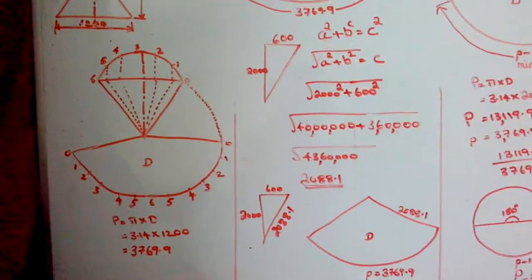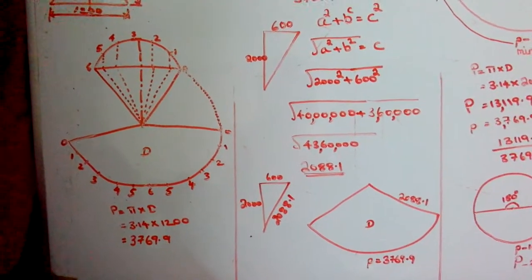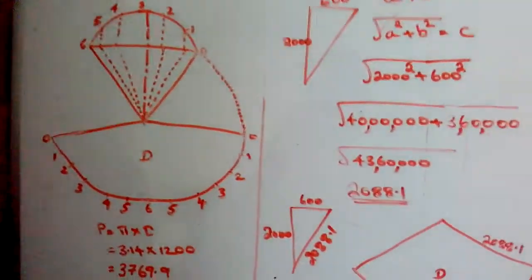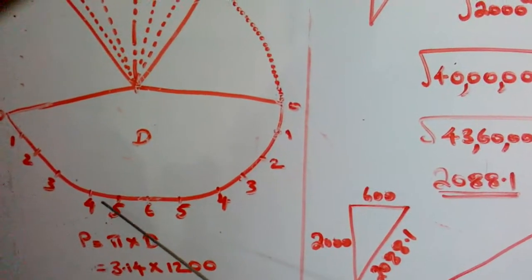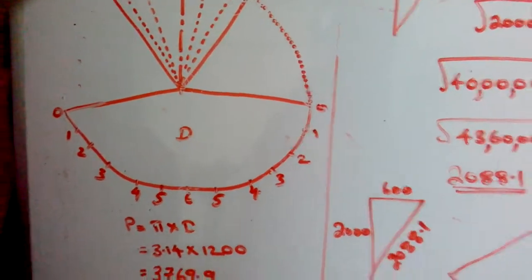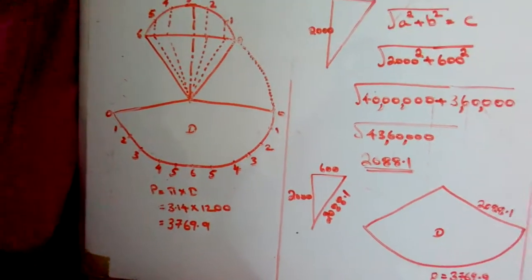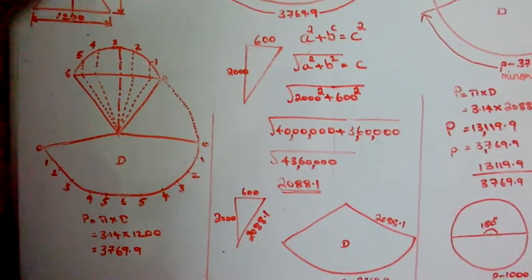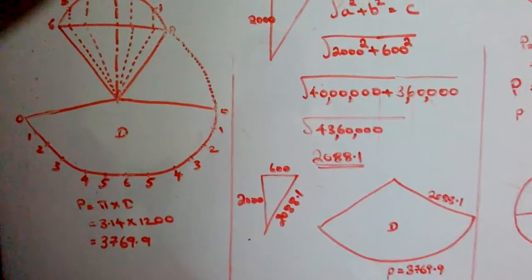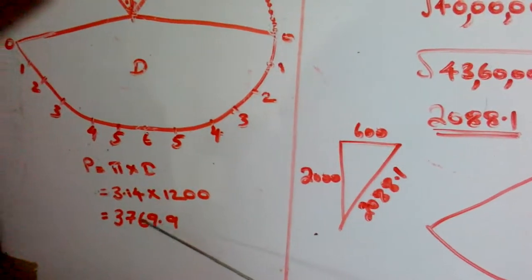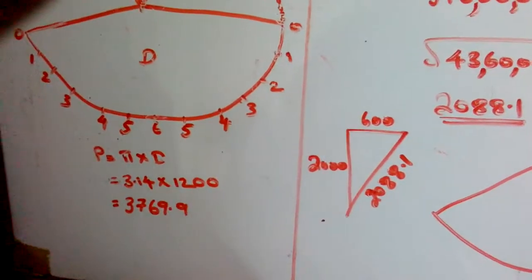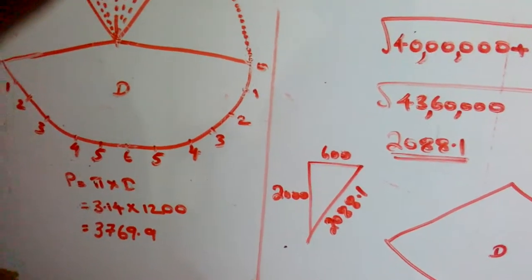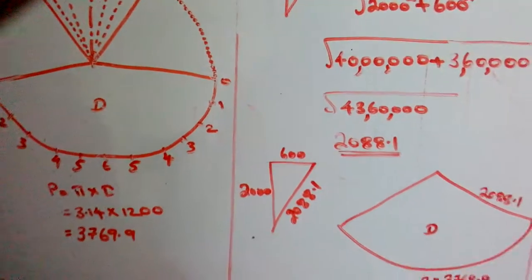So finally we decided that if we calculate using the formula P = πD, we will get some more accuracy. We did that calculation and got the measurement 3769.9. I won't describe these steps again because I covered them in the last episode.